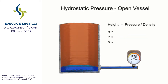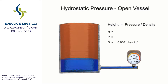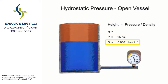To find pressure, a gauge is placed at the bottom of the vessel. With water having a density of 0.0361 pounds per cubic inch, the level of the fluid is calculated by dividing the head pressure by the density of the fluid.